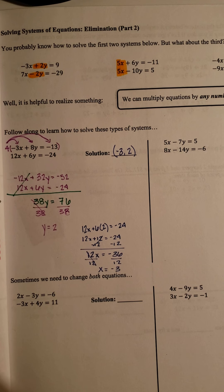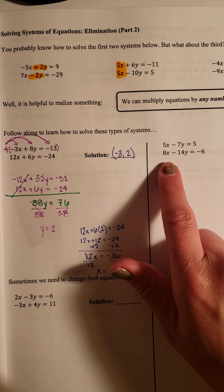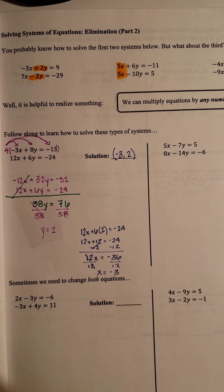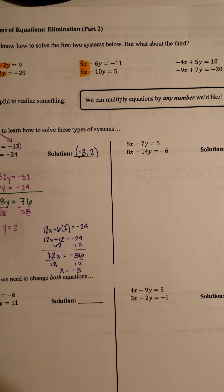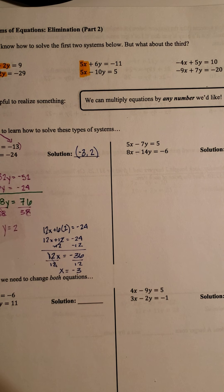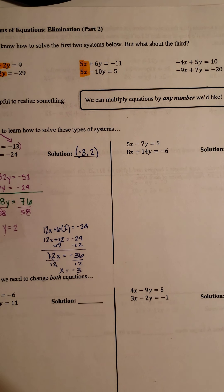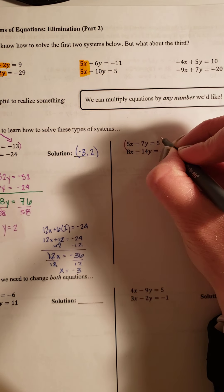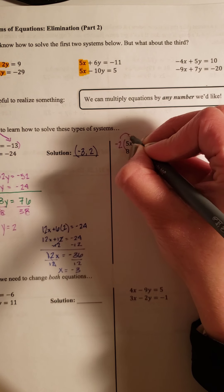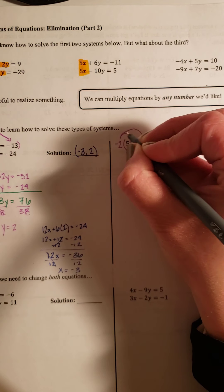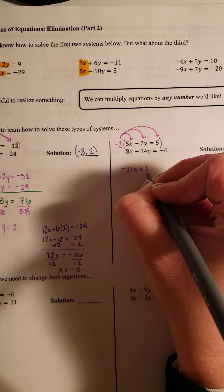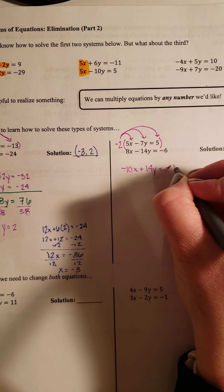So I always think of these as a puzzle. In the next problem, I have both positives, both negatives, but right away I notice that 7 can go into 14. But I can't just multiply by a 2. I have to multiply through by a -2. And the reason is because I have two negatives. So I am going to just multiply through by a -2. And what this does, it gives me -10X + 14Y = -10. The bottom equation stays the same, I don't do anything to it.